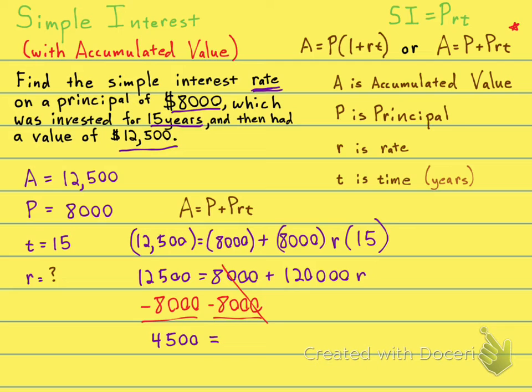4,500 equals 120,000 times R. One more step to get this grumpy R by itself, and that is to divide both sides by 120,000. The right-hand side divided by 120,000. The left-hand side divided by 120,000.